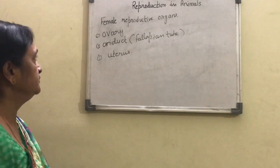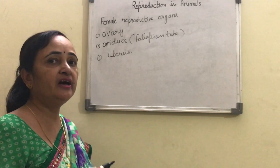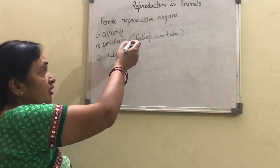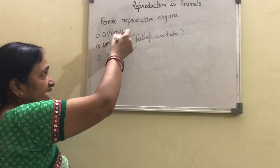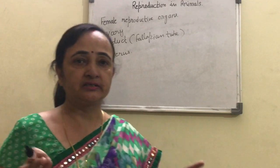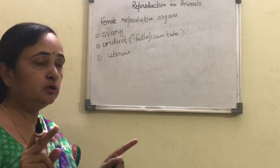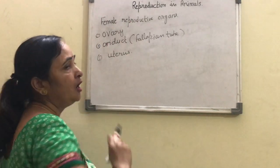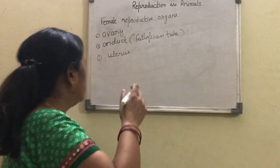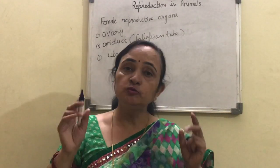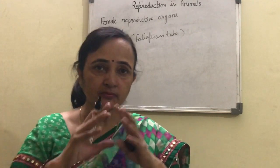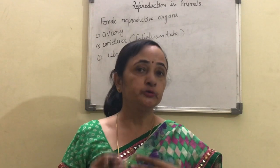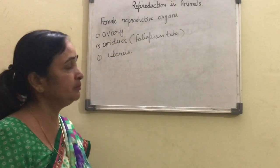The ovary produces ova, which is the female gamete and is also single-celled. After the production of the female ova, it is carried out by the oviduct. There are two ovaries and two oviducts. With the help of the oviduct, the ova reaches the uterus. The uterus is the place where the baby develops. So the development of the baby takes place in the uterus.